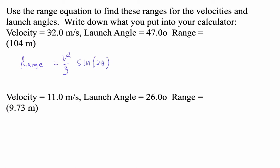Let me just show you what you type in your calculator. So here's our v. Literally type 32 squared divided by 9.8 times sine two times, what's our angle? 47.